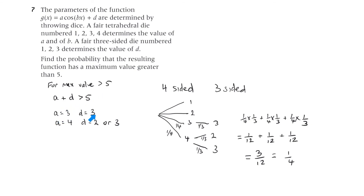That can happen when a equals 3 and d equals 3, or a equals 4 and d equals 2 or 3. For the four-sided die, we need to get a 3 or a 4 — the chance of that is 1/4 each. For the three-sided die: if a is 3, we need d equals 3, with probability 1/3. If a is 4, we could get d equals 2 or d equals 3, each with probability 1/3. Adding up the tree branches: (1/4 × 1/3) + (1/4 × 1/3) + (1/4 × 1/3) equals 1/12 + 1/12 + 1/12 equals 3/12, which is 1/4, or 0.25.